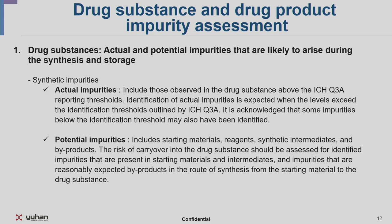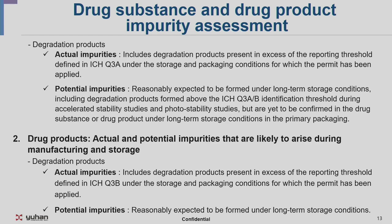For DS and DP impurity assessment, during synthesis and storage, actual and potential impurities need to be assessed. ICH Q3A defines actual and potential impurities. For actual synthetic impurities, identification is done when levels exceed the identification threshold in ICH Q3A. Potential impurities include starting materials, reagents, synthetic intermediates, and byproducts — and their carryover risk to the drug substance needs to be assessed. Impurities reasonably expected as byproducts in the route of synthesis from starting material to drug substance must also be assessed.